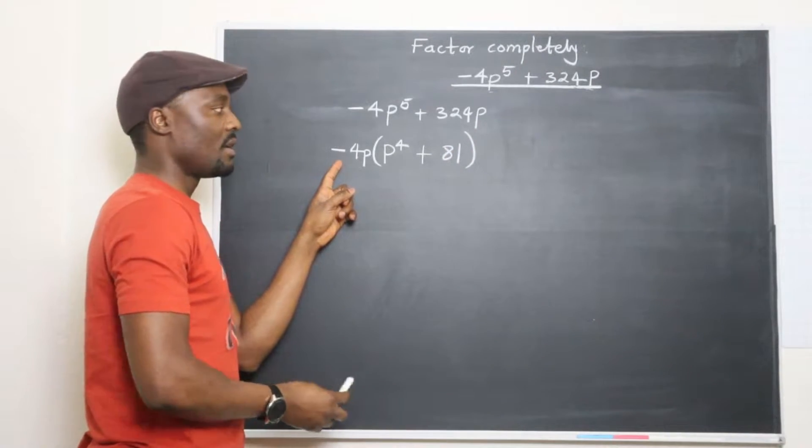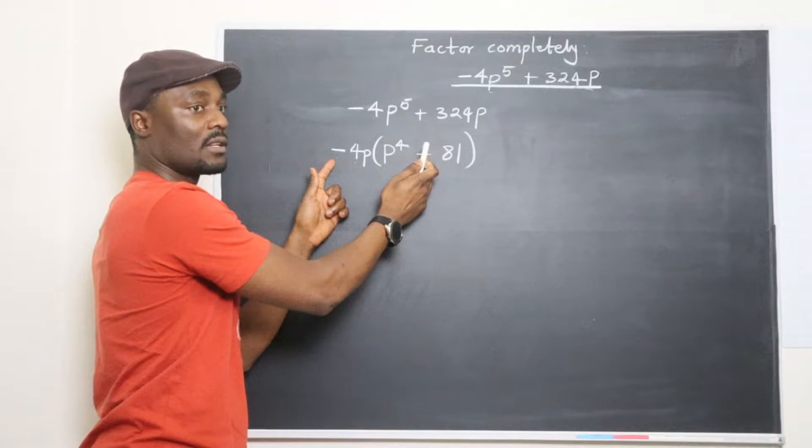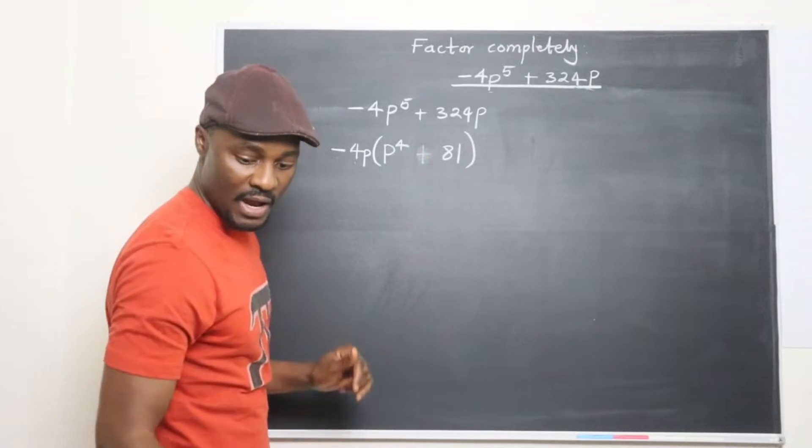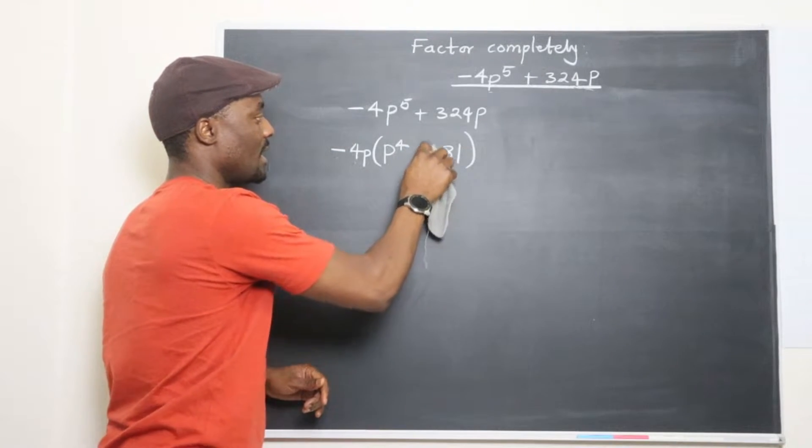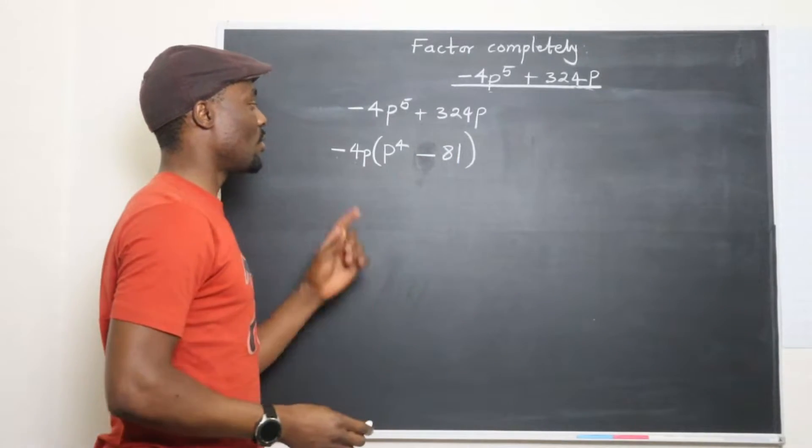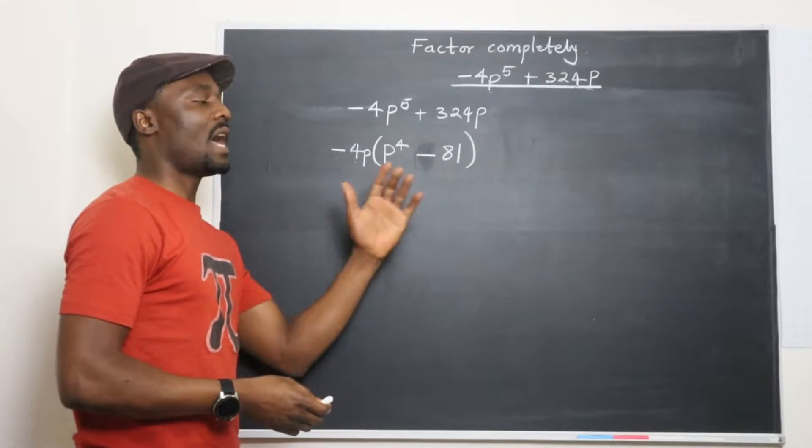However, there's a problem here because when you take out the negative 4, this sign cannot be positive anymore. It has to be negative. So we've got to get rid of that positive and change it into a negative sign. So you have negative 4P into that.